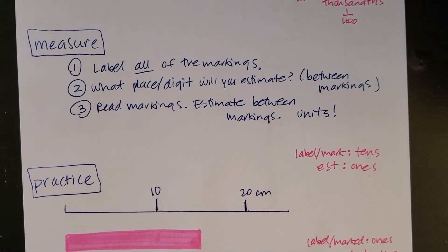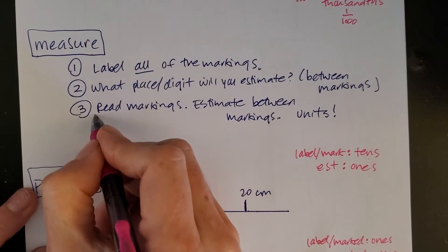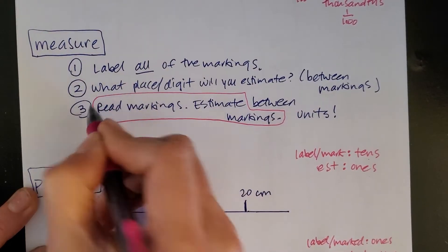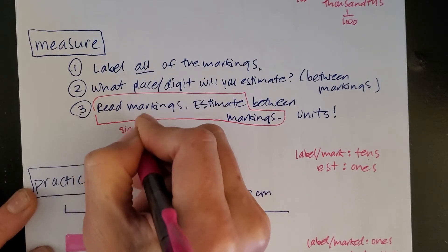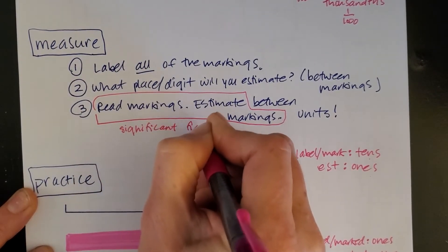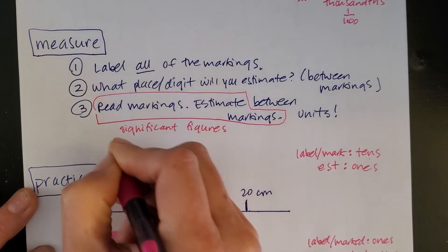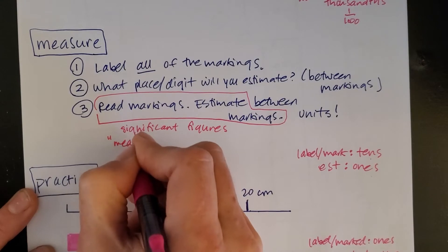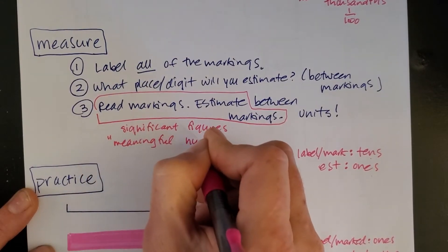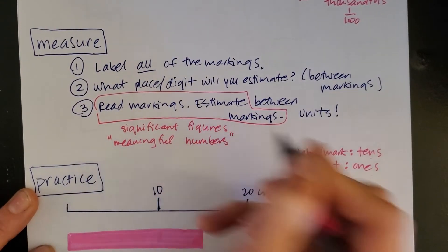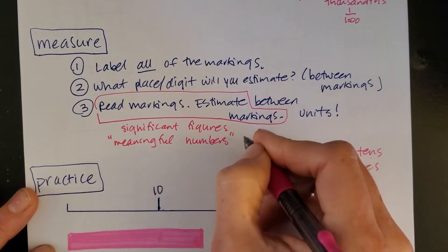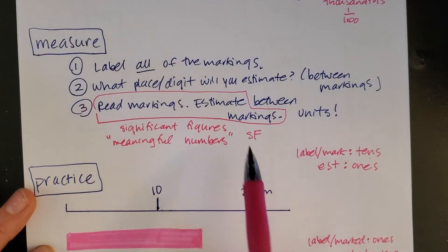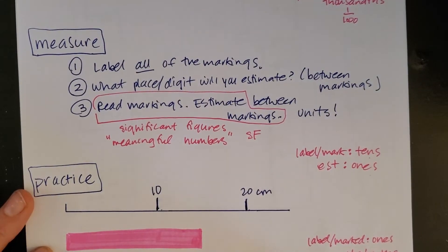When we talk about significant figures, the marking numbers that you read along with the estimate, so all of this, these are all called significant figures. And to put that in a different way that sounds a little less weird, this would be meaningful numbers. That's basically what we're saying. You'll see me when I'm grading, or in other settings, sometimes the significant figures is abbreviated SF. So if you see SF, that means you have a mistake with your significant figures.